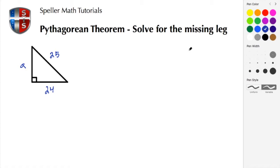Here we have a right triangle and we're trying to solve for the missing leg. To do that, we're going to use the Pythagorean theorem, and that equation or formula is a squared plus b squared equals c squared.